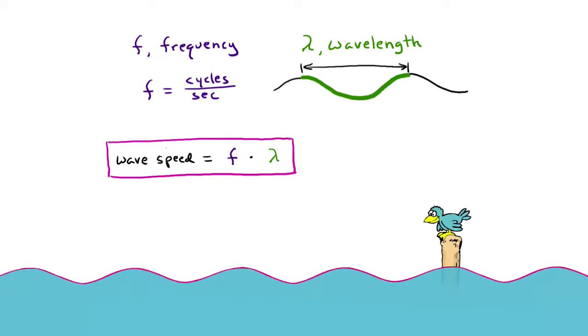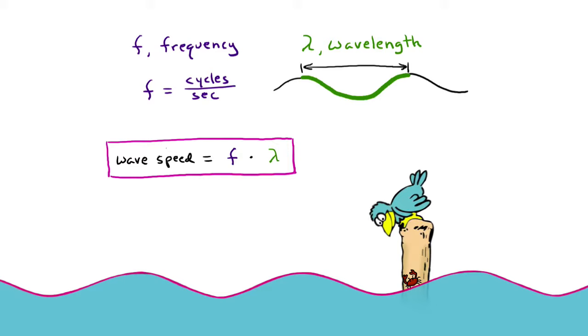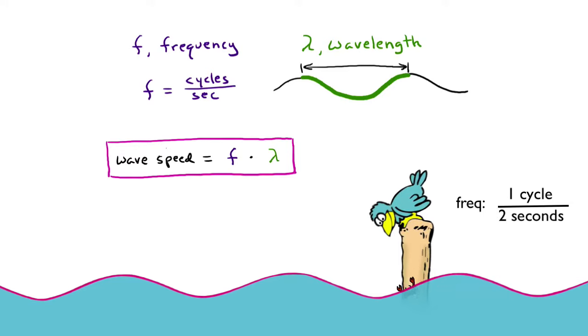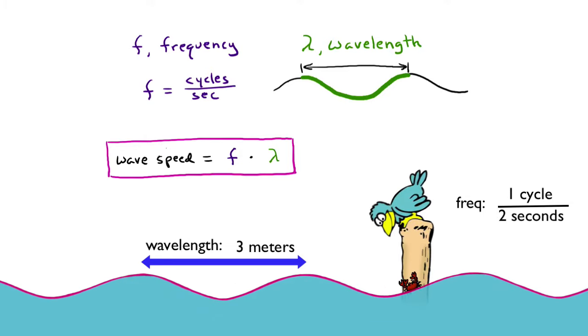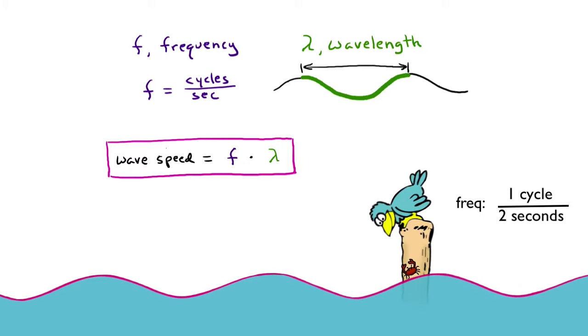Let's say a bird sees a delicious crab crawling up and down a post in time with the passing waves. The crab is going up and down once every two seconds. If the wavelength is, say, three meters, how fast are the waves traveling past the post?